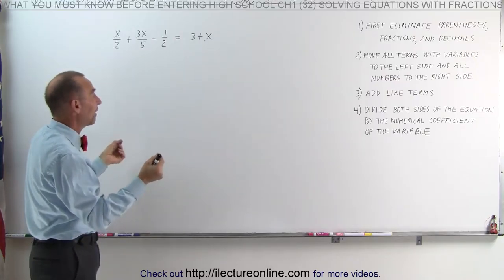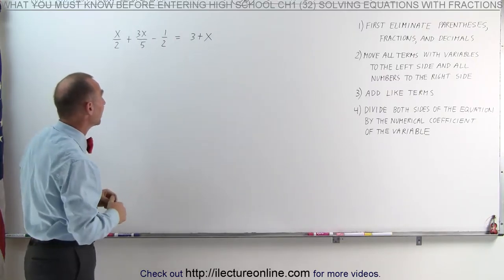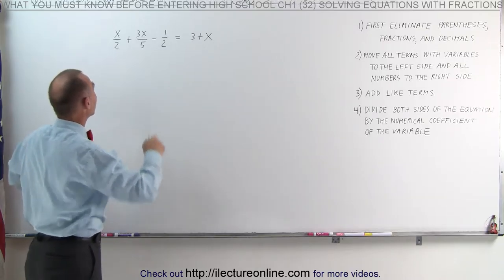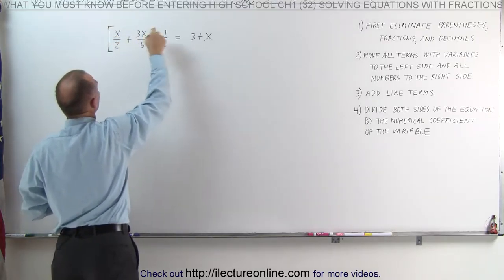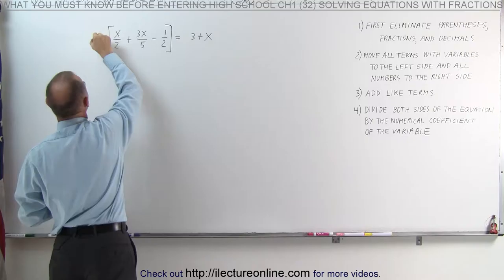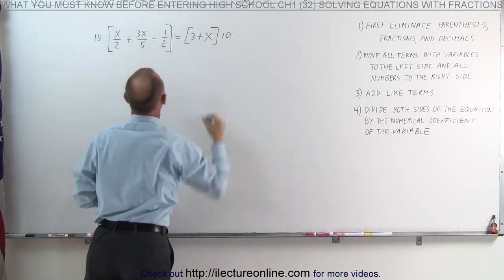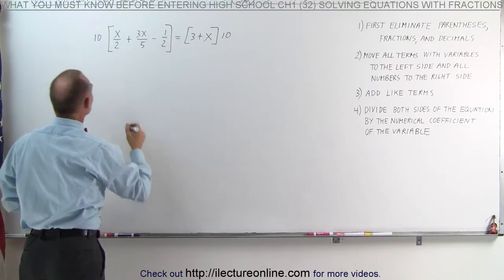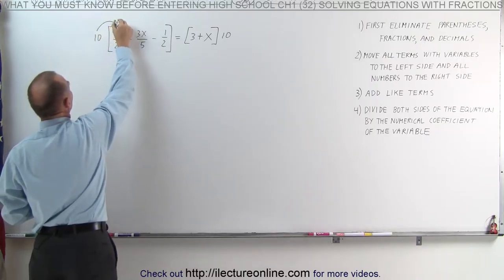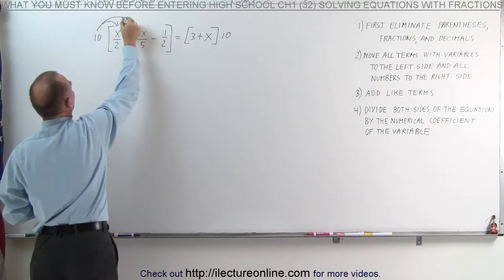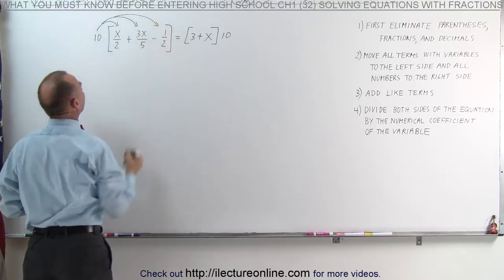We simply multiplied all the factors that appeared in the denominators. That means we can multiply both sides of the equation by the lowest common denominator. In this case that would be 10, and that will eliminate the fractions. So what we're going to do is multiply the 10 times x over 2, times 3x over 5, and times negative 1 half.